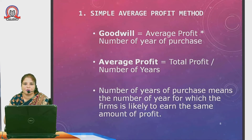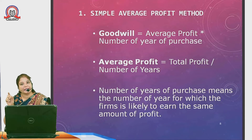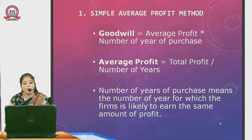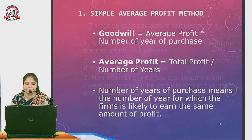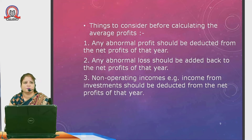In the simple average profit method, goodwill is calculated as: Average Profit × Number of Years Purchase. Average Profit = Total Profit ÷ Number of Years. For example, sum up five years of profit and divide by five to get average profit. Number of years purchase means the number of years for which the firm is likely to earn the same amount of profit. Things to consider before calculating: any abnormal profit should be deducted from net profit of that year; any abnormal loss like loss by fire should be added; and non-operating income like income from investments should be deducted from net profit.